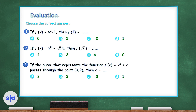Now for the evaluation section. Question 1: if f(x) = x² - 1, then f(1) = 1² - 1 = 0.